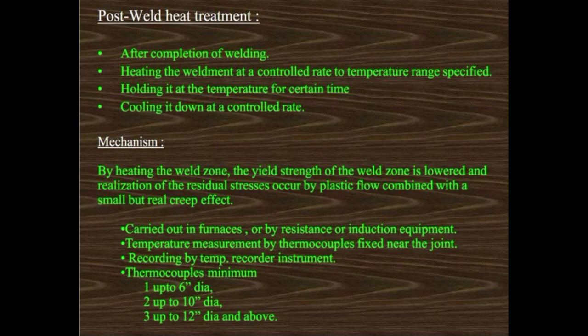So in summary: preheating is before welding, post heating is after welding. Post weld heat treatment (PWHT) is after completion of welding. PWHT involves heating the weldment at a controlled rate to a specified temperature — for example, 300 or 400 degrees — holding it for a certain time, such as two hours, then lowering the temperature gradually, and finally cooling down at a controlled rate to ambient temperature.